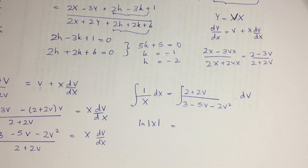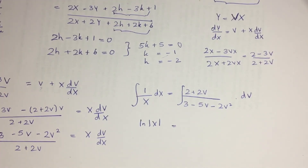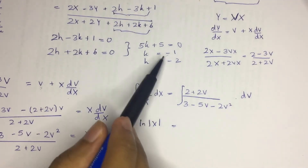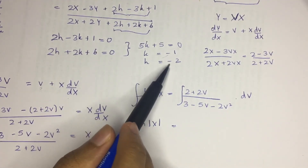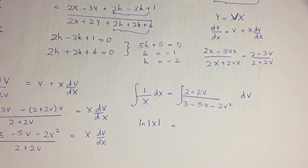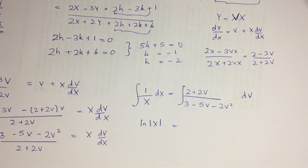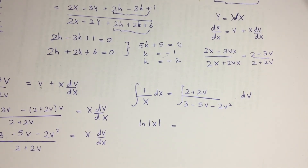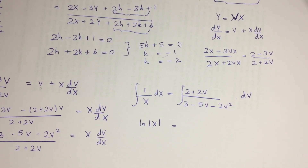Once you have the result in terms of capital X and Y, you need to convert back to simple x and y. Since X equals x plus h and Y equals y plus k, substitute h equals minus 2 and k equals minus 1 to get the final answer. Please leave your answer in the comment section. If you like this video, please like it and share with your friends. Thank you for listening.